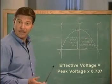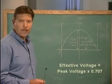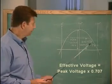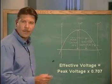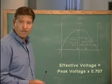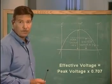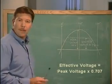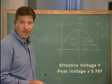The actual effect that this voltage has on a circuit is called the effective voltage. The effective voltage can be found by multiplying the peak voltage by 0.707.